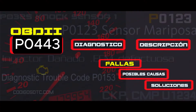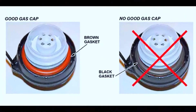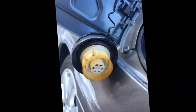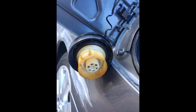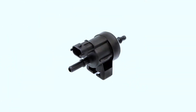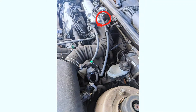Diagnosing the problem — there are a few things that could cause this code. A loose or faulty gas cap is the most common reason. The gas cap creates a seal to prevent vapors from escaping, and a loose or damaged cap can throw the code. The purge valve itself can also malfunction and get stuck open or closed.